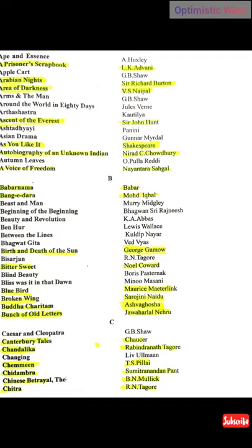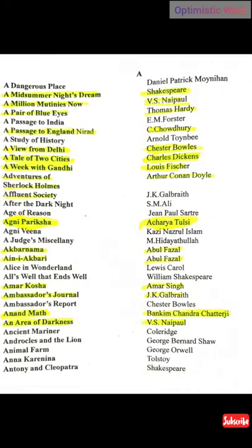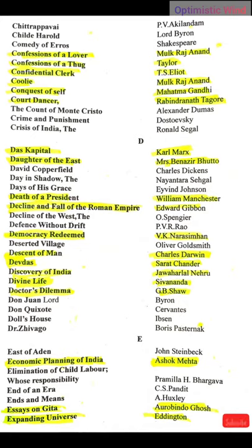Broken Wings — written by Sarojini Naidu. Buddha Charitam — written by Ashvaghosa. Bunch of Old Letters — by Jawaharlal Nehru. Canterbury Tales — by Chaucer. Chandalika — by Rabindranath Tagore. Chemmeen — by T.S. Pillai. Chidambara — by Sumitranandan Pant. The Chinese Betrayal — by B.N. Malik. Chitra — by Rabindranath Tagore. Confession of a Lover — by Mulk Raj Anand. Confession of a Thug — by Taylor. Confidential Clerk — by T.S. Eliot. Coolie — by Mulk Raj Anand. Conquest of Self — by Mahatma Gandhi. Co-dancer — by Rabindranath Tagore.